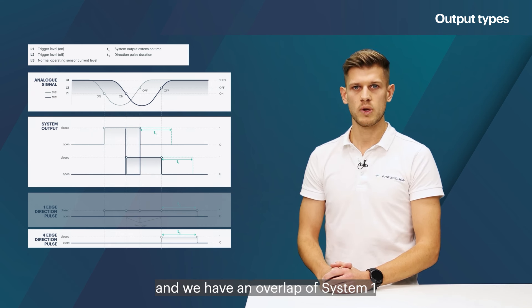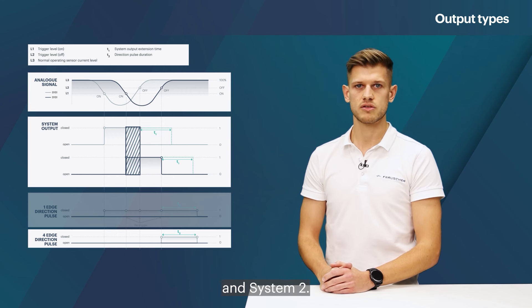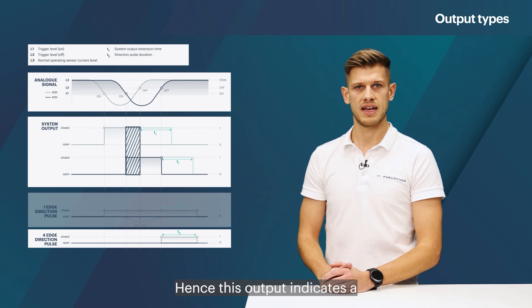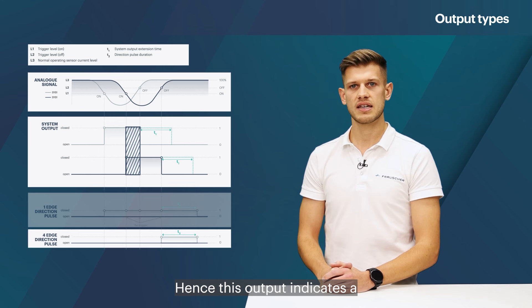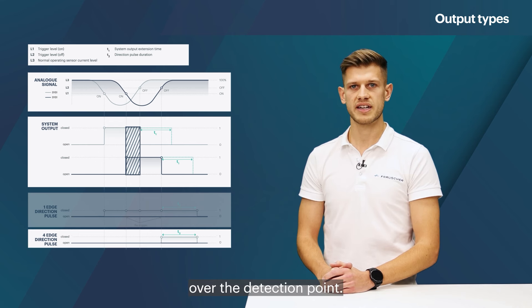And we have an overlap of system 1 and system 2. Hence, this output indicates a full traversing of a wheel over the detection point.